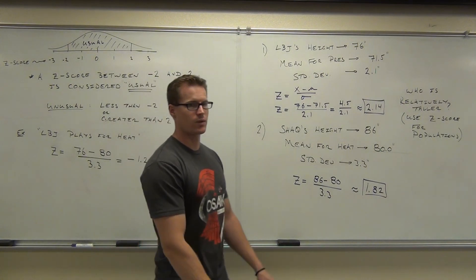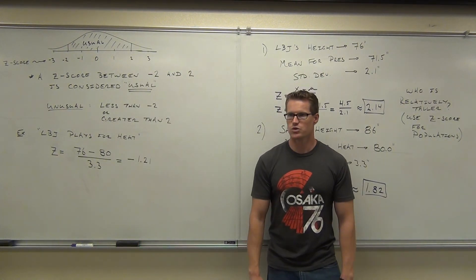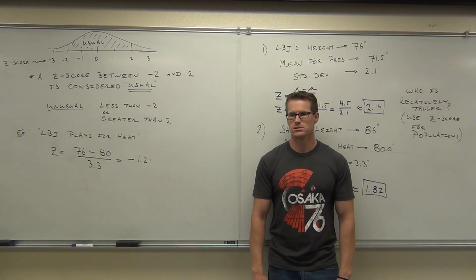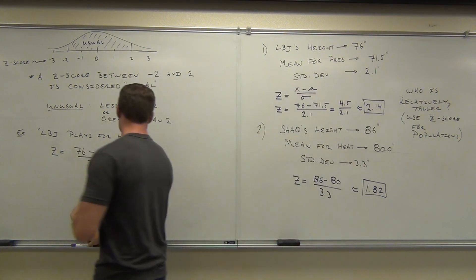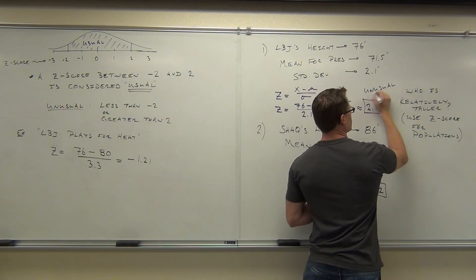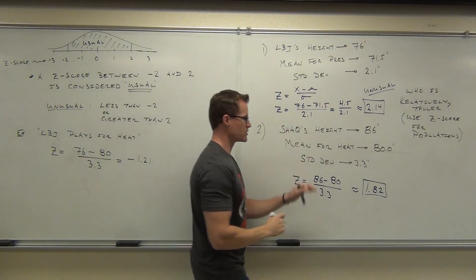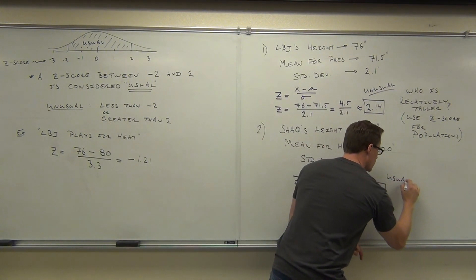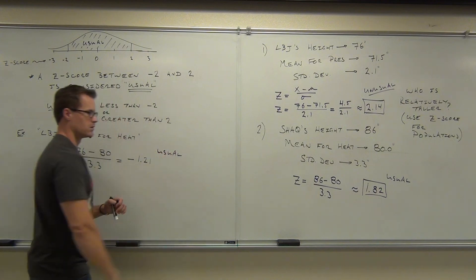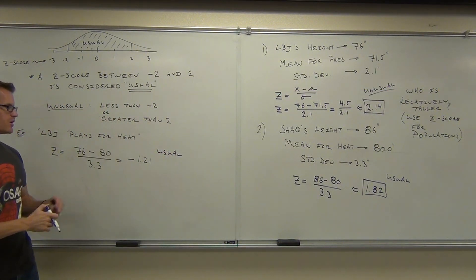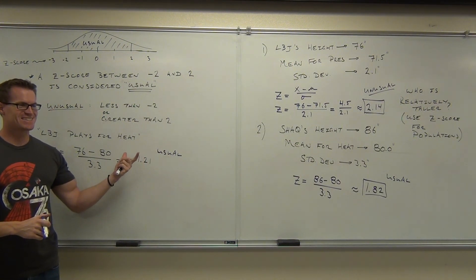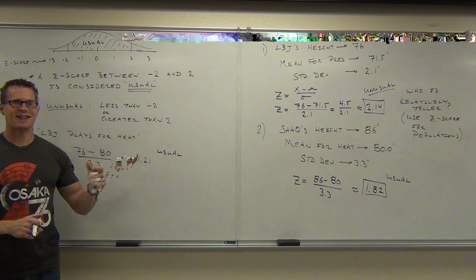Okay. So, negative 1.21. My question is, would it be usual or unusual if someone of LBJ's height were playing for the Miami Heat? Usual. Why? It's within that 2 range. So, looking back at this, this would be unusual to have a president that tall. It's greater than 2. It would be usual for someone of Shaq's height to be playing for the Miami Heat. It would be usual, common or not rare enough, for someone of LBJ's height to be playing for the Miami Heat. How about Mr. Leonard's height? 7'2". I shrunk. I swear I did.